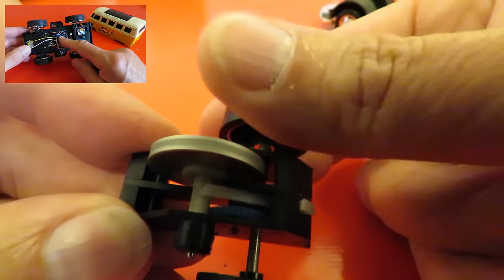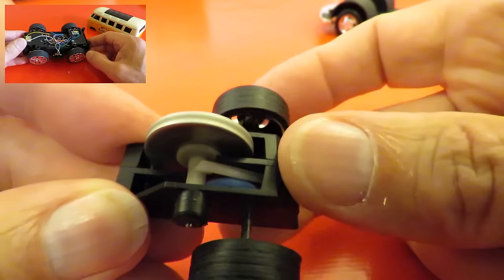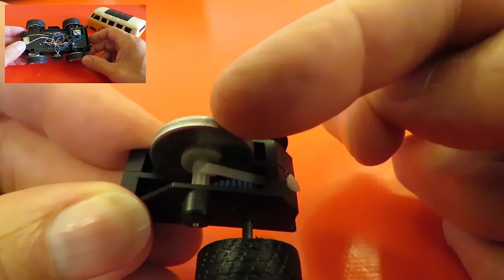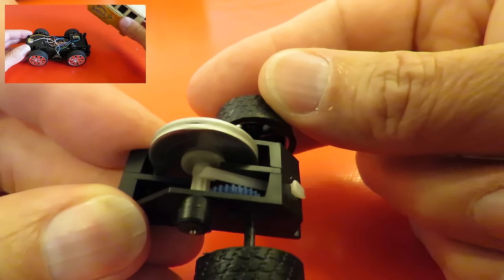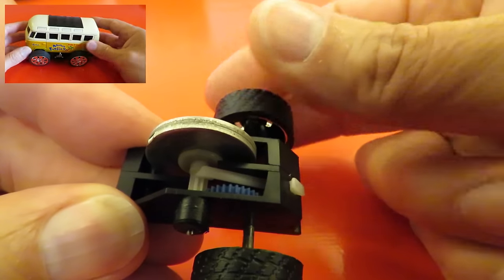So a small turn of the road wheels gives us multiple turns of the flywheel, so it builds up speed.